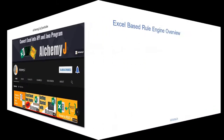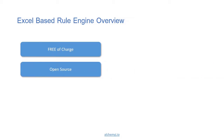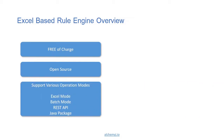Let's have an overview of the Excel-based rule engine. First of all, it is completely free — you can download it and use it for free, and it is open source so you can view all the source code. The most powerful function of the rule engine is that you can run it in various modes: in Excel, as a batch process interfacing with input and output files, or you can generate a REST API or Java package from this Excel-based rule engine, so you can integrate the rules with any applications.